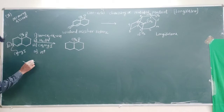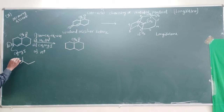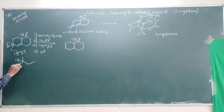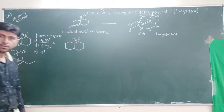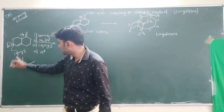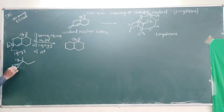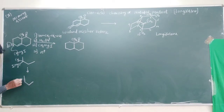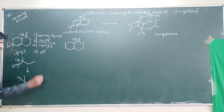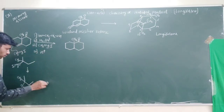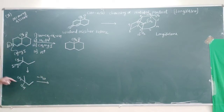At this reaction center, CH3 attacks, giving an OMgBr intermediate. After addition of H+, the OMgBr converts to OH. After that, removal of the water molecule occurs, giving a double bond. So with removal of H2O, we get a double bond present here with the CH3 group.